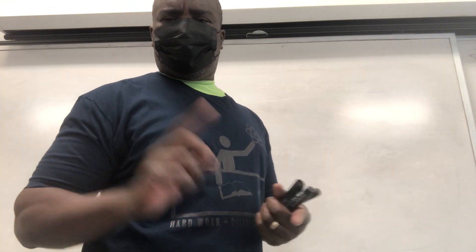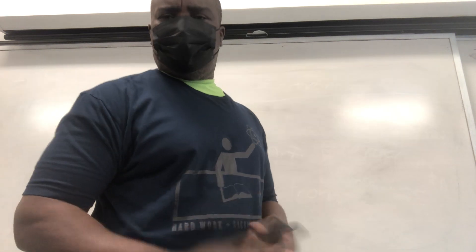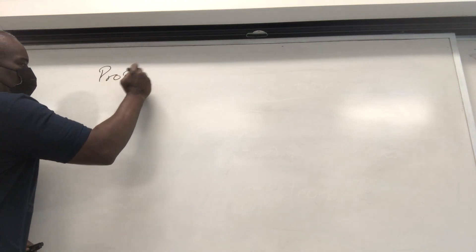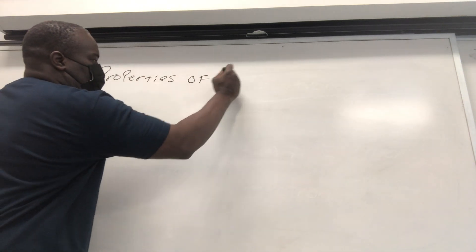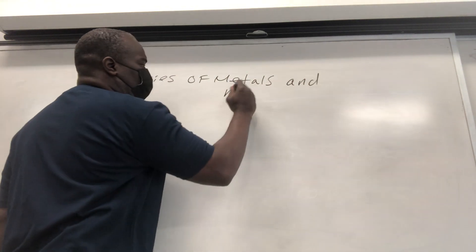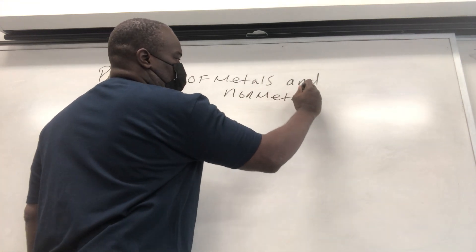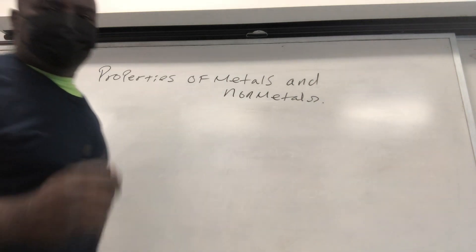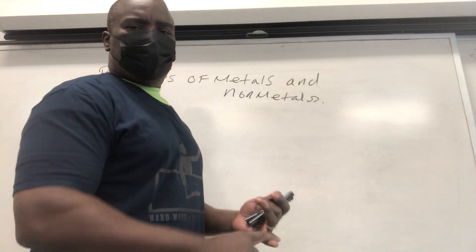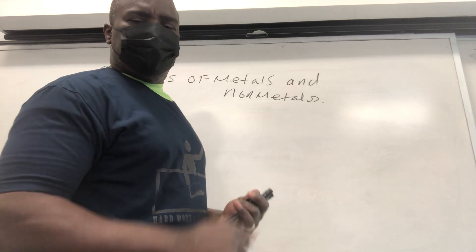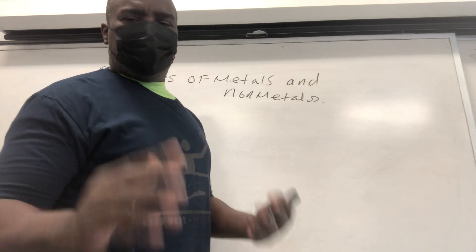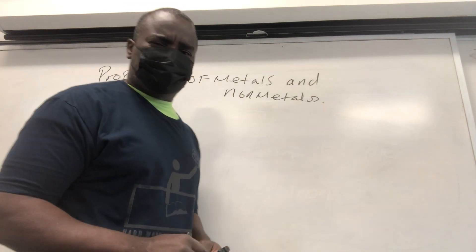We're going to look at today's video on the properties of metals and non-metals. You've got to know the location of metals on the periodic table. There are metals, non-metals, and semi-metals. The semi-metals are the elements on the staircase. The periodic table is dominated by metals — around 80% of the table are metals.